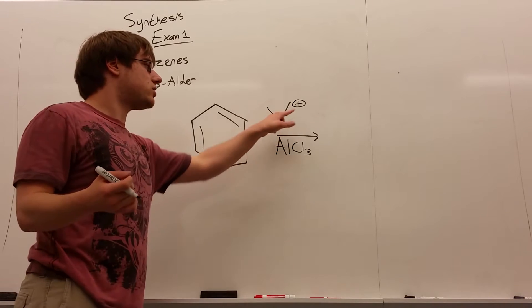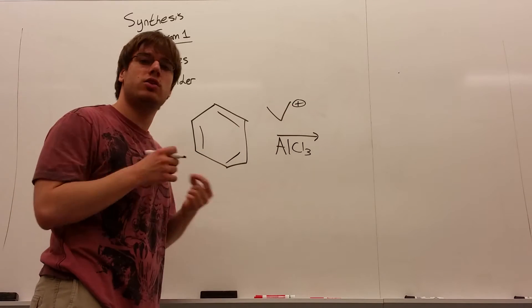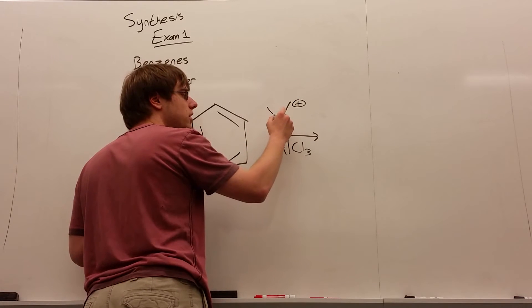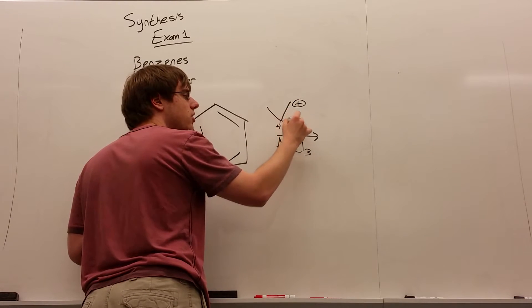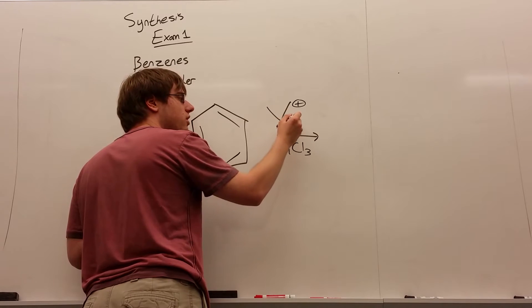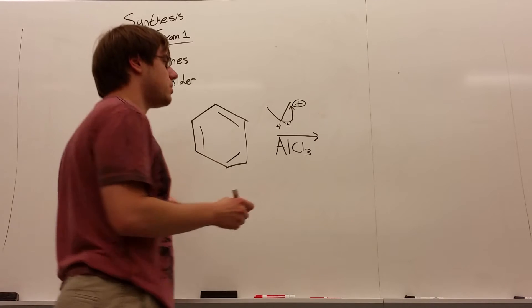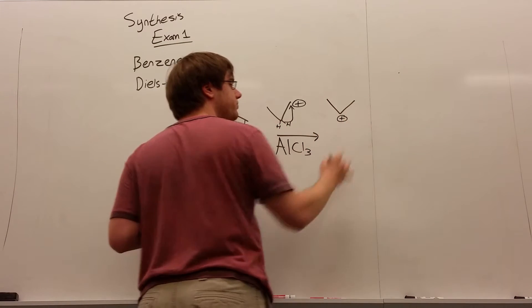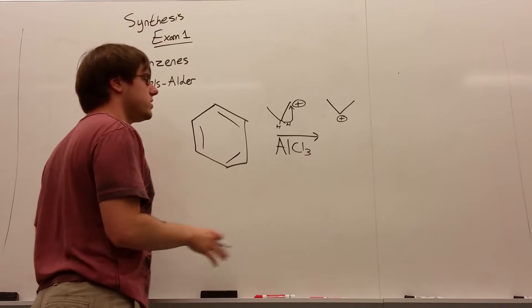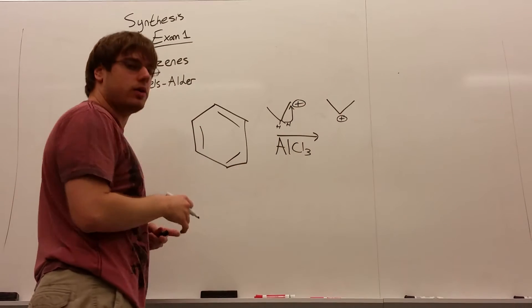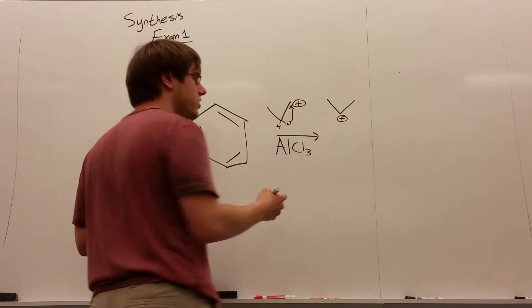And now, these carbocations that you form through this step are always able to do carbocation shifts. And this carbocation will almost instantly look to move to a more stable position. Right now, it's on a primary carbon, but right next door is a secondary carbon. And what will happen is something called a hydride shift. The hydrogen of the adjacent carbon switches positions with that positive, and now you get the positive charge in the middle.